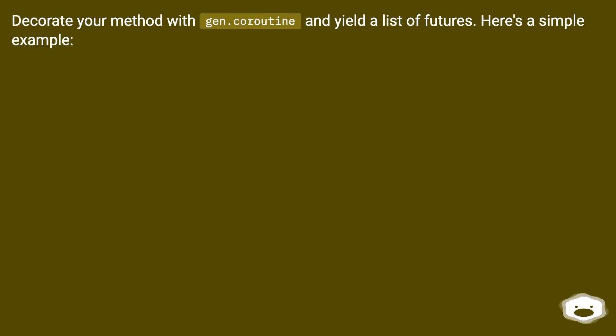Decorate your method with gen.coroutine and yield a list of futures. Here's a simple example.